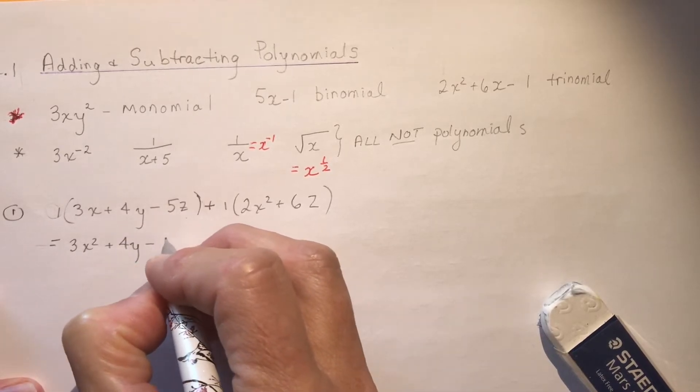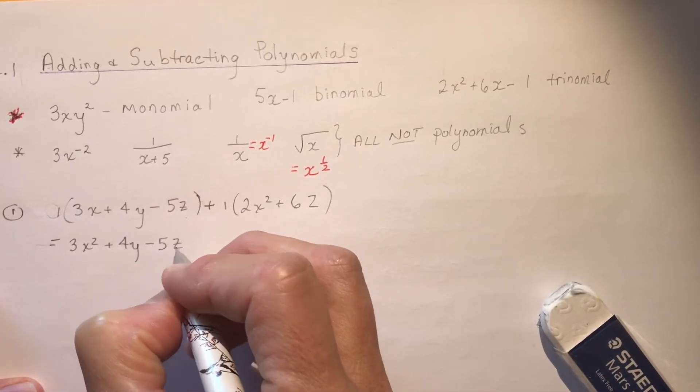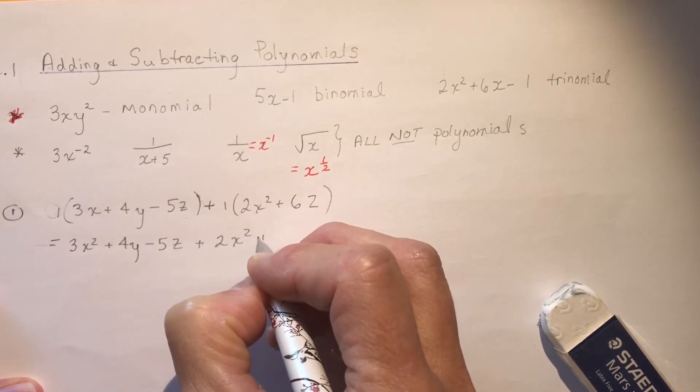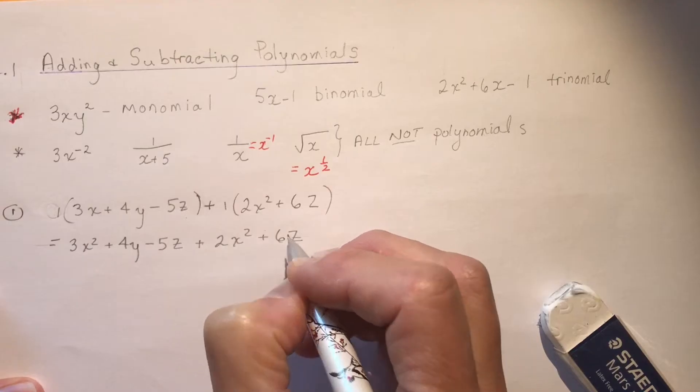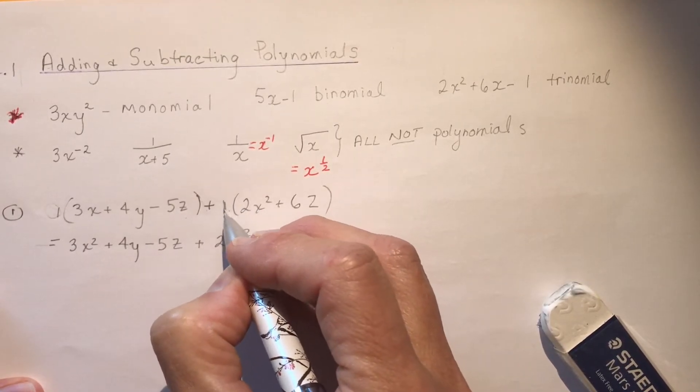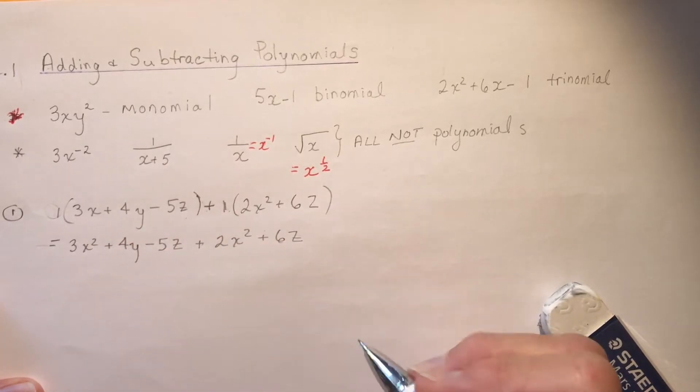Where it's going to get complicated, of course, is when we have a minus sign in front, and we're going to look at one of those in a minute. So if there's just brackets, you can remove brackets if the term in front is positive. You're adding them, so I'm adding one of these. So look, I just removed the brackets.